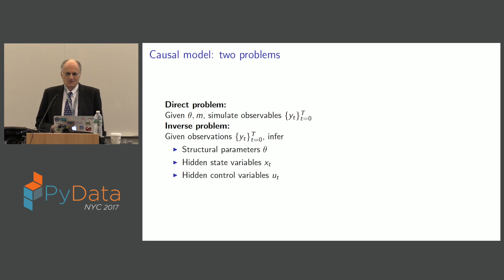So now I'm going to tell you about causal models. There's two problems. I learned this at a physics and engineering chemistry conference. Two problems of causal models. There's a direct problem and there's the inverse problem. The direct problem is you give me theta and m, the measurements, and I'm going to simulate the observations. You give me a model, I can generate observations. The inverse problem is you give me the observations and I want to infer a bunch of stuff. I want to infer the structural parameters. I want to infer the hidden states and I want to infer the hidden control variables, perhaps. I want to infer all that stuff, back all that stuff out. And this is a very Bayesian or Stan view.